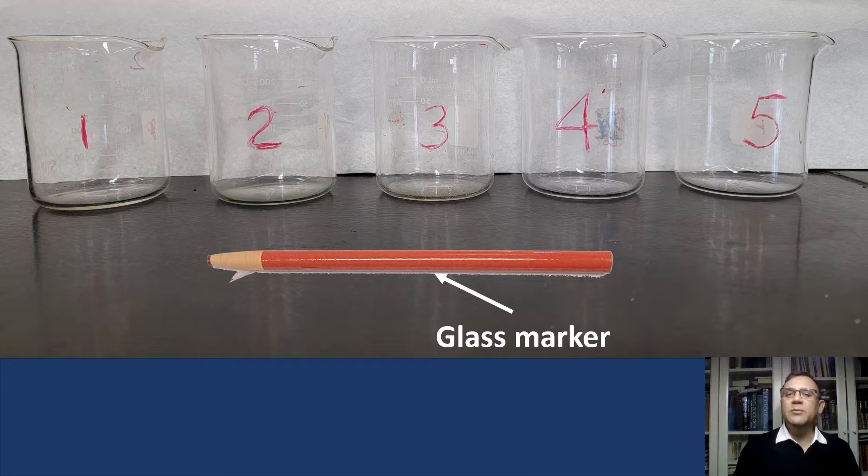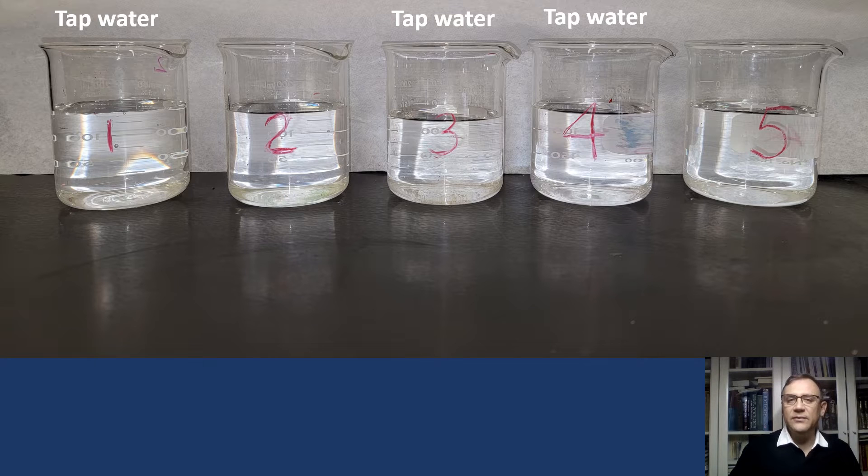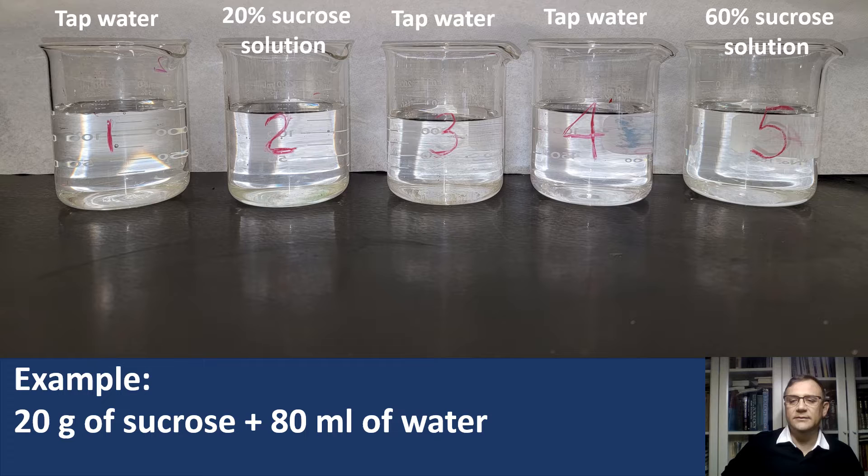First, we have to label five beakers for our experiment using a glass marker. I poured about 150 ml of tap water in beakers one, three, and four. In beaker number two, I poured about 150 ml of 20% sucrose solution.